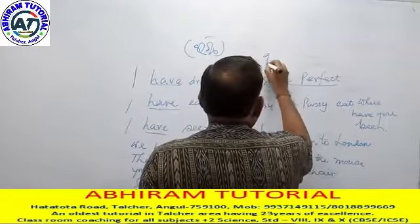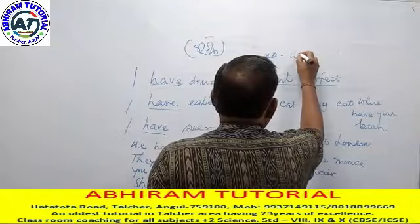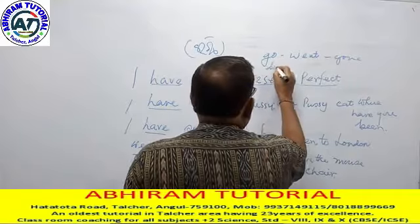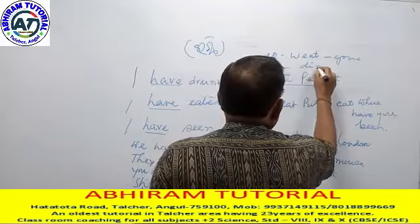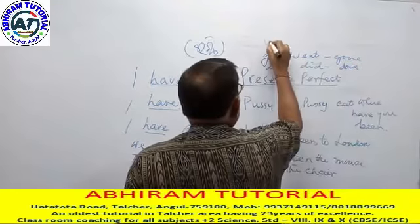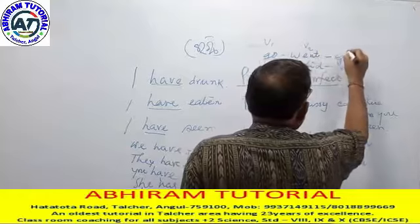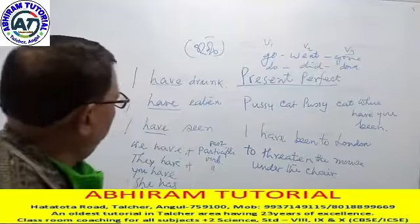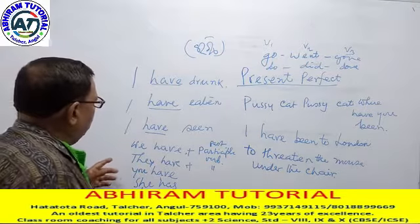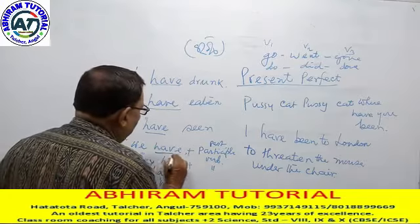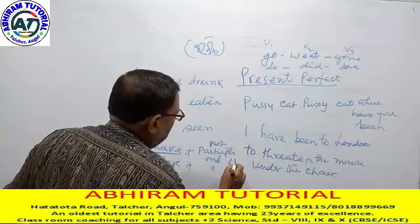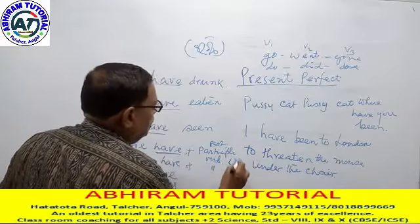For example: go, went, gone. Do, did, done. This first form is known as V1, second as V2, third as V3. So when we make present perfect sentences, we take the help of have or has plus the past participle verb, which is V3. So this must be used.